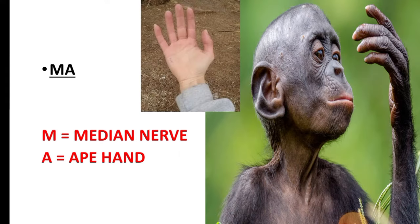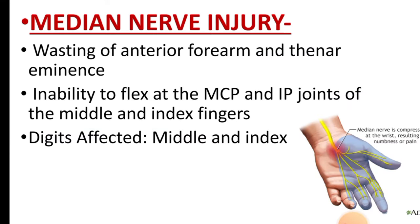Moving forward with Dr. Kuma: MA — M is for median nerve and A is for ape hand. So median nerve injury will cause ape hand. Median nerve injury is basically wasting of the thenar eminence, and inability to flex at the metacarpophalangeal joint and interphalangeal joints of the middle and index fingers.